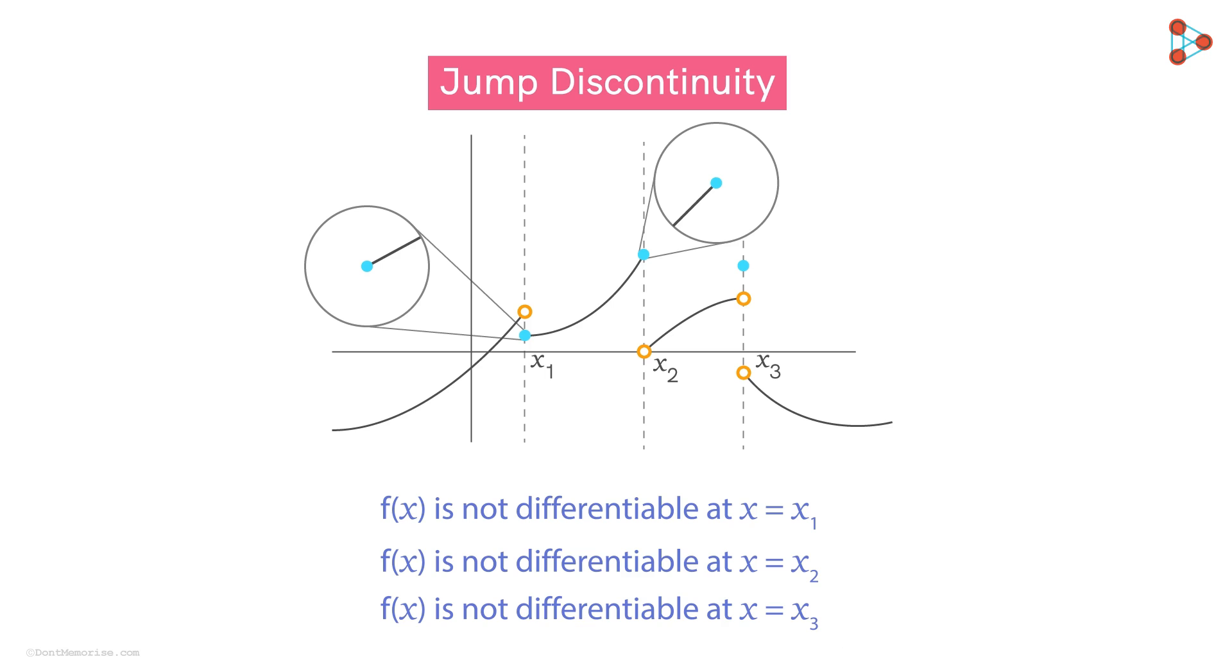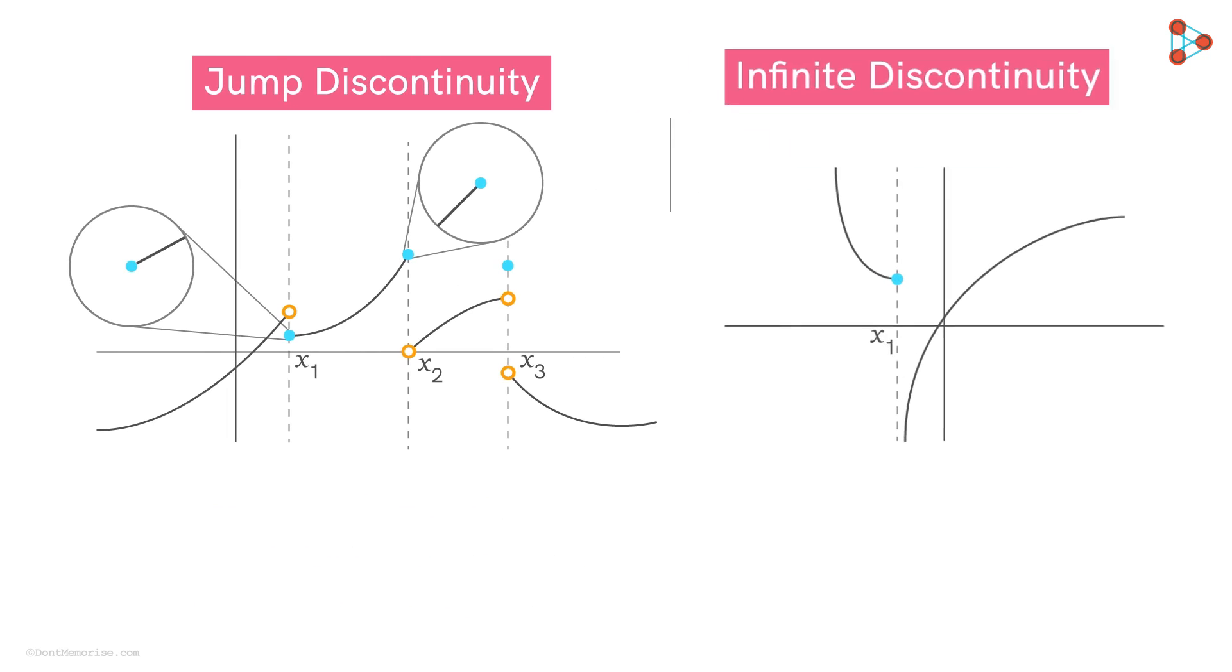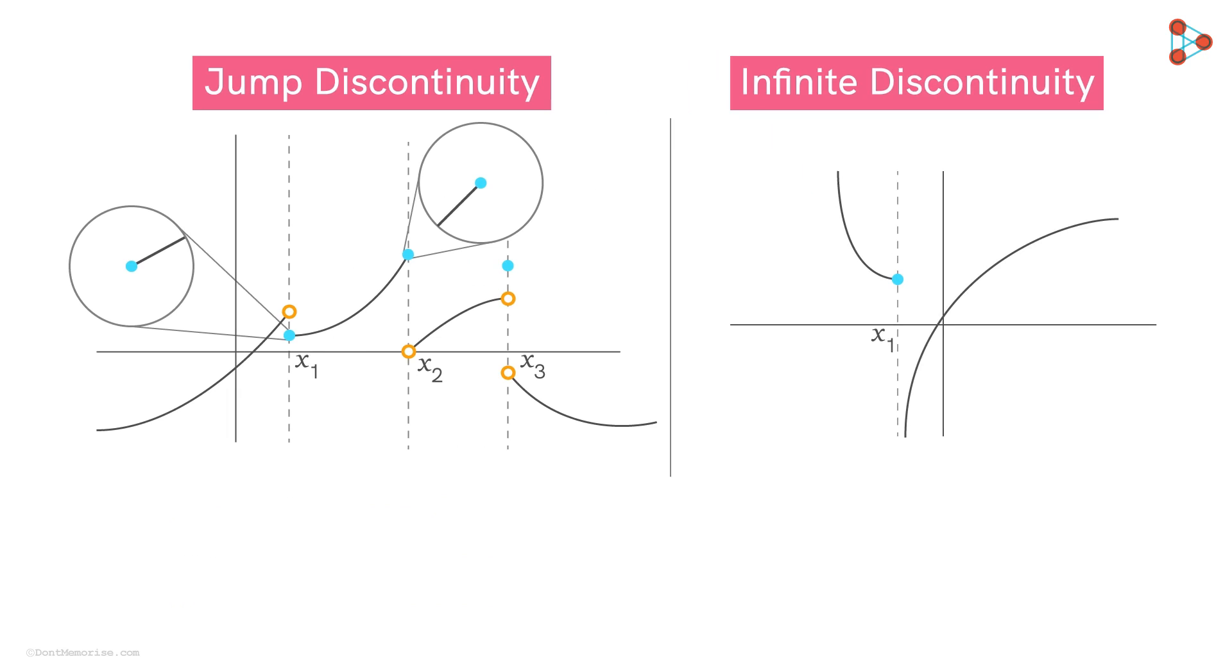In fact, not only in this type, basically the function is not differentiable at a point of discontinuity of any type. Here's an example of infinite discontinuity at point X1. Again, we can approximate the function by a straight line only in the immediate left neighbourhood of this point on the curve. As we approach X1 from the right, the function shoots to negative infinity.